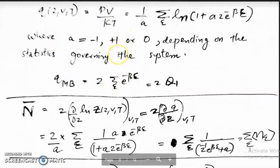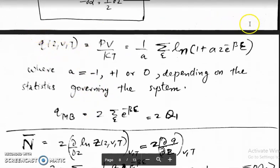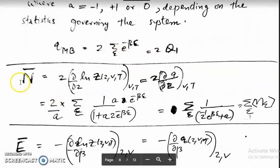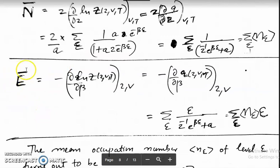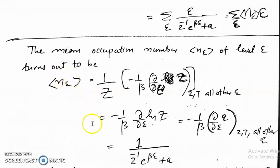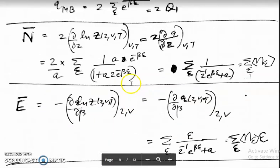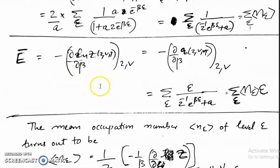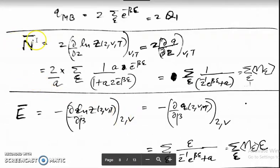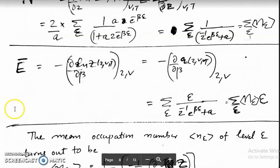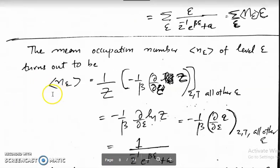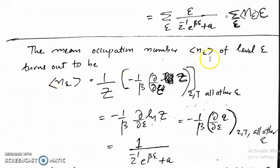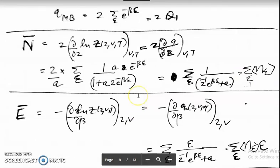Now we want to determine the average number of particles, the average energy, and the mean occupation number — that is, the average number of particles in a given energy level ε. For that, we use the usual relation: the average number of particles is given by Σ_{r,s} n_r · e^{−αn_r − βE_s} divided by Σ_{r,s} e^{−αn_r − βE_s}.